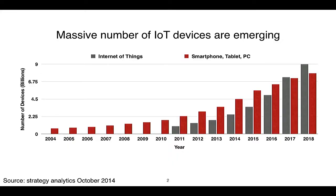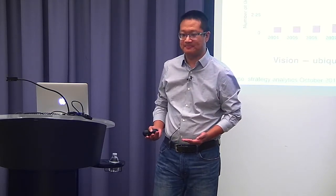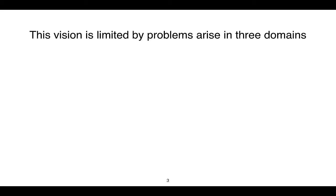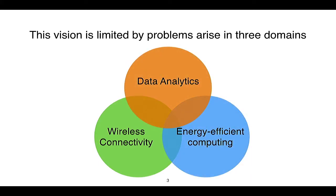In recent years, we have seen a massive number of IoT devices fabricated and shipped to the market. Last year, the number of IoT devices exceeded the combined market of the PC, smartphone, and tablet. The vision is that we are going to see a world where IoT devices are widely deployed in the next several years. However, we think this vision is limited by research problems in three domains: wireless connectivity, energy-efficient computing, and data analytics for IoT devices.